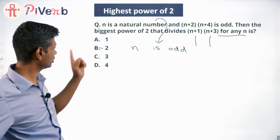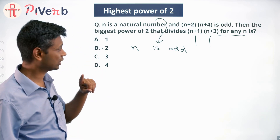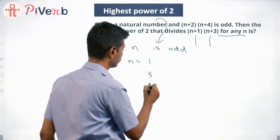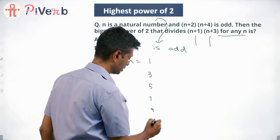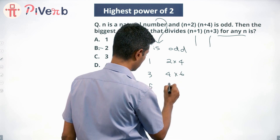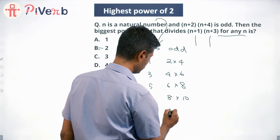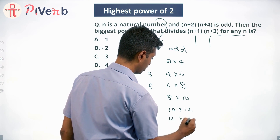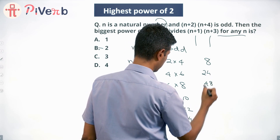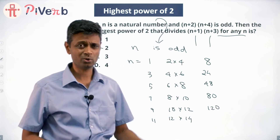2² is obviously in the choices. Let me verify: n is odd, so n could be 1, 3, 5, 7, 9, 11... Then (n+1)(n+3) gives: 2×4, or 4×6, or 6×8, or 8×10, 10×12, 12×14, etc. Computing: 2×4=8, 4×6=24, 6×8=48, then 80, 120, and so on. All of these are multiples of 4 — that was obvious.